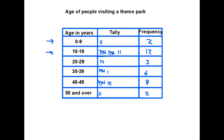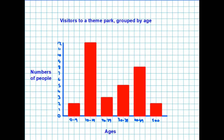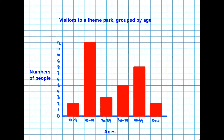Now let's have a look at how we would represent this grouped data in a bar chart. Here it is — the bar chart contains the same information as the table on the previous page. It is like any other bar chart: it has a title, labels, the number of people going up the side as the scale, and the ages along the bottom. The one thing to notice is that each bar now represents not a specific age but the groups we saw earlier, so bar one is naught to nine year olds, bar two is 10 to 19, 20 to 29, and so on. Other than that it is the same as any other bar chart.